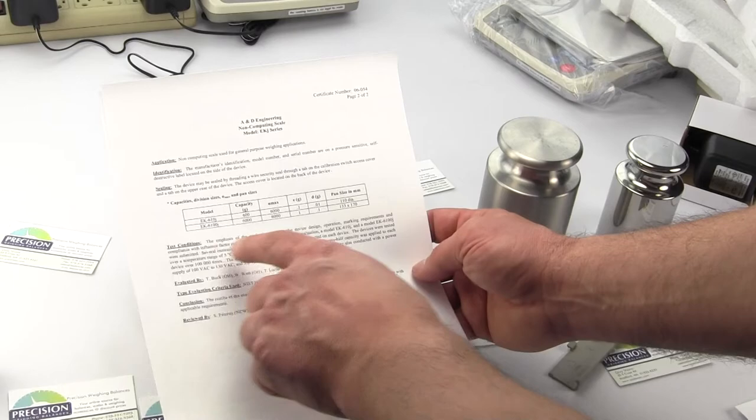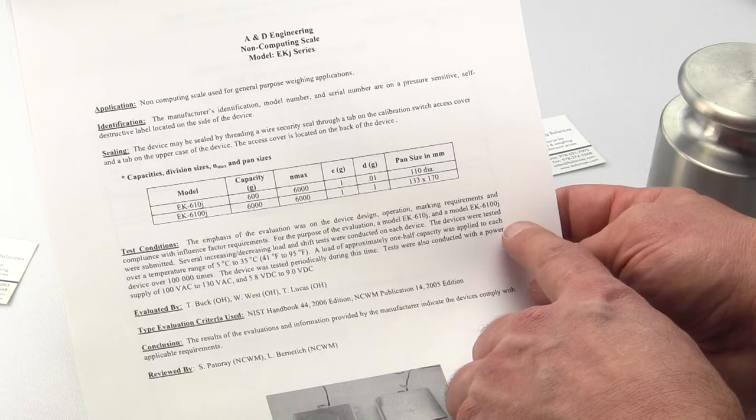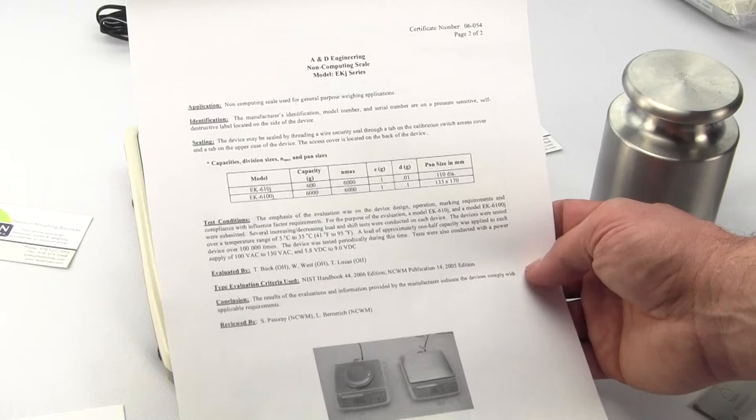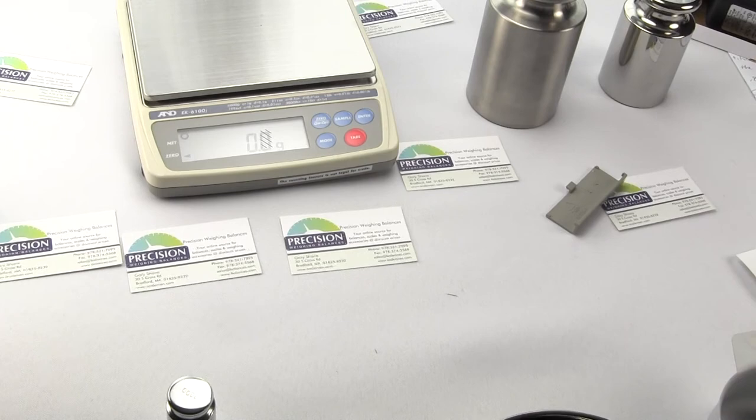And you'll see right here, the devices were tested under this temperature range and a load approximately one half the capacity was placed on the device 100,000 times. So the bottom line is the majority of the scales out there are not legal for trade since they could not pass this tough testing. The only way you're able to succeed in testing and get legal for trade approval is by using the highest quality load cells in excellent, well engineered products. And A&D does that.